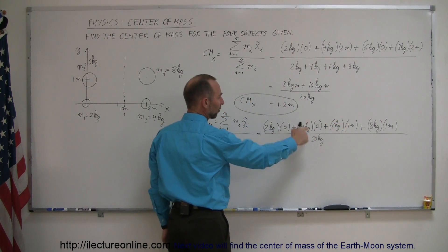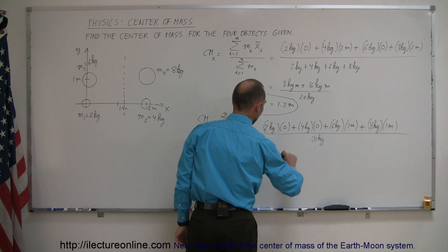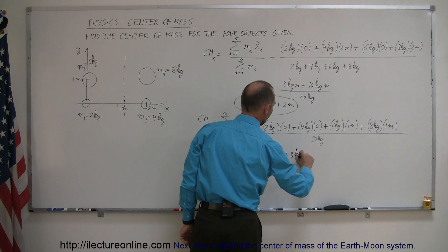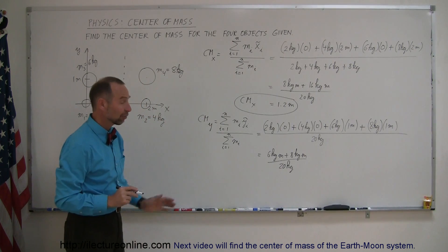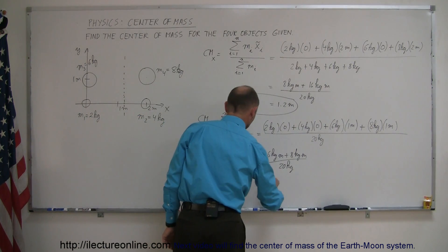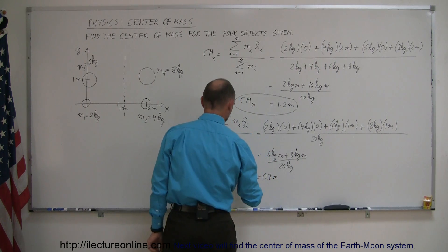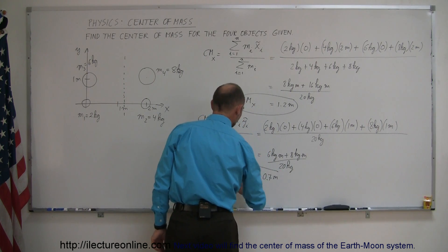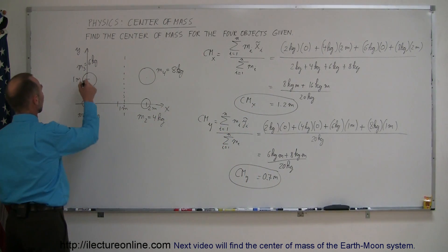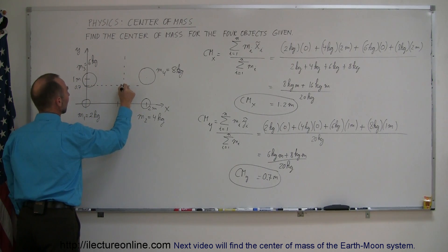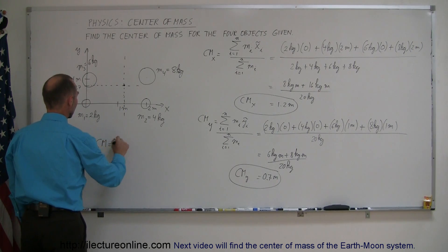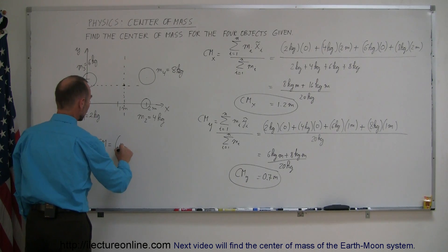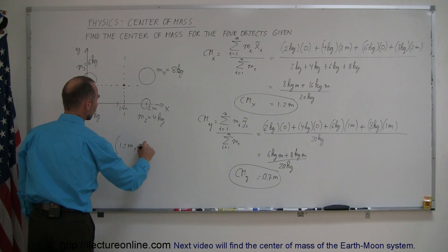Simplifying that, we have 0 plus 0 plus 6 kilogram-meters plus 8 kilogram-meters, divided by 20 kilograms. The kilograms cancel out, and that's 14 divided by 20, which is 0.7 meters. So the center of mass in the y-direction is 0.7 meters. This is 1 meter, this is about 0.7, so drawing a line across here, the center of mass of these four objects put together is right at that location. Center of mass is 1.2 meters in the x-direction and 0.7 meters in the y-direction.